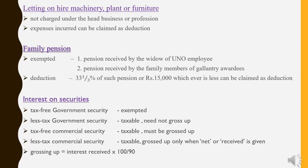Moving on to family pension. Pension is the amount received by an employee after retirement. Family pension means that even after the death of the employee, if the employer gives pension to the family members of the deceased employee, that pension is called family pension. Family pension is taxable except for two categories: pension received by the widow of a UNO employee, or pension received by gallantry awardees — for these two, it is exempted. For all other categories it is taxable. When bringing family pension to tax, the assessee can claim a standard deduction of 33⅓% of the pension received or ₹15,000, whichever is least.